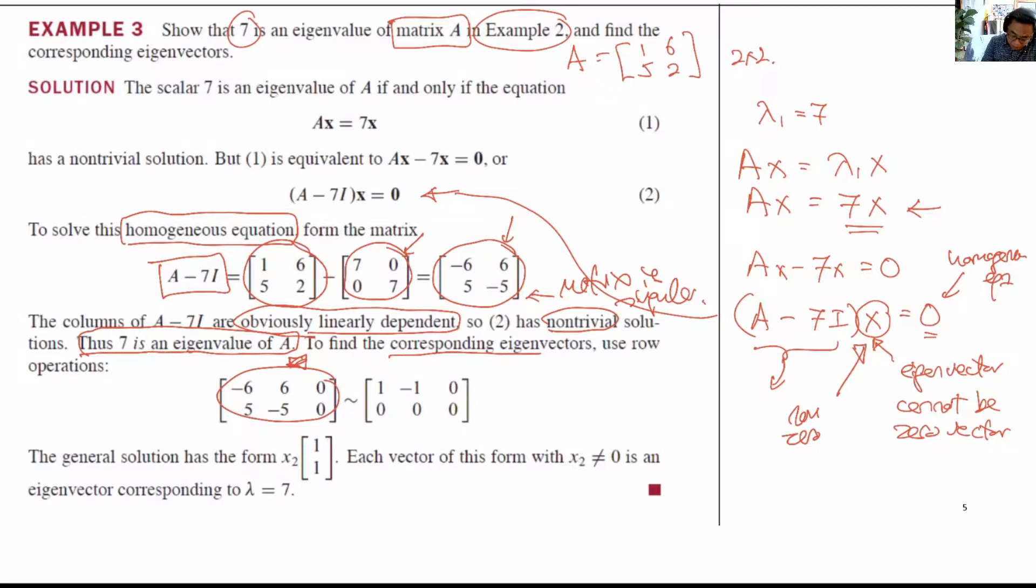And because we have dependent columns, therefore we have dependent rows. And therefore you only have one pivot and one free variable. This is the free variable, and this is the pivot in the square. And therefore now you can find a general solution.